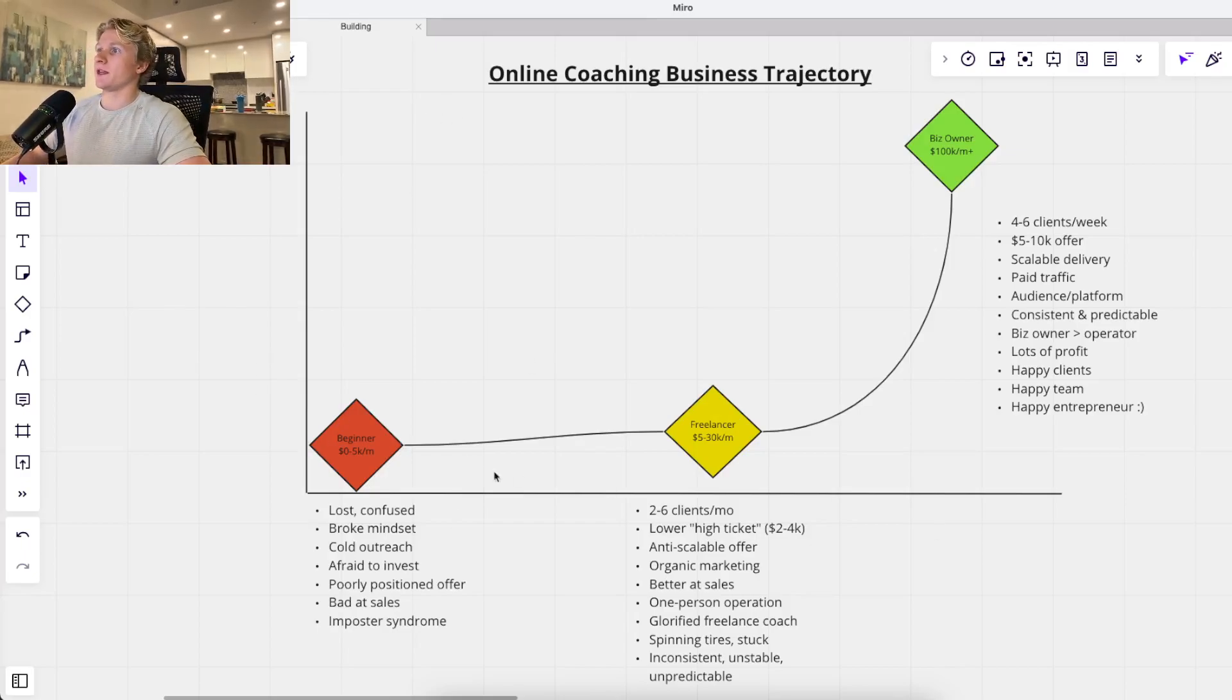As you can see, it's an exponential curve. So from a beginner to basically a glorified freelancer doing anywhere from $5K to $30K a month, it's going to be slow growth. It's going to be very slow. It's going to take a long time. But essentially, I help people make the leap from here to here, right? From good to great, essentially. So let's just kind of go through one by one.